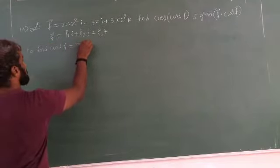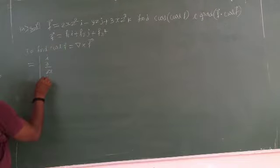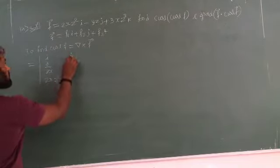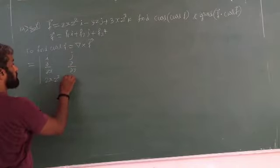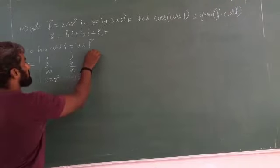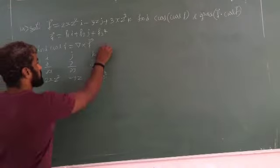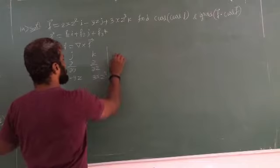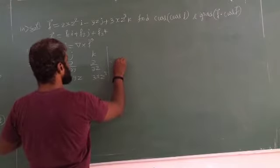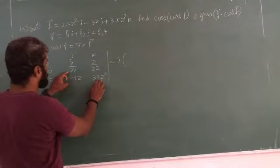That is del cross vector F. Using the determinant: i ∂/∂x, j ∂/∂y, k ∂/∂z into F1 is 2xz², F2 is minus 3yz, F3 is 3xz³.